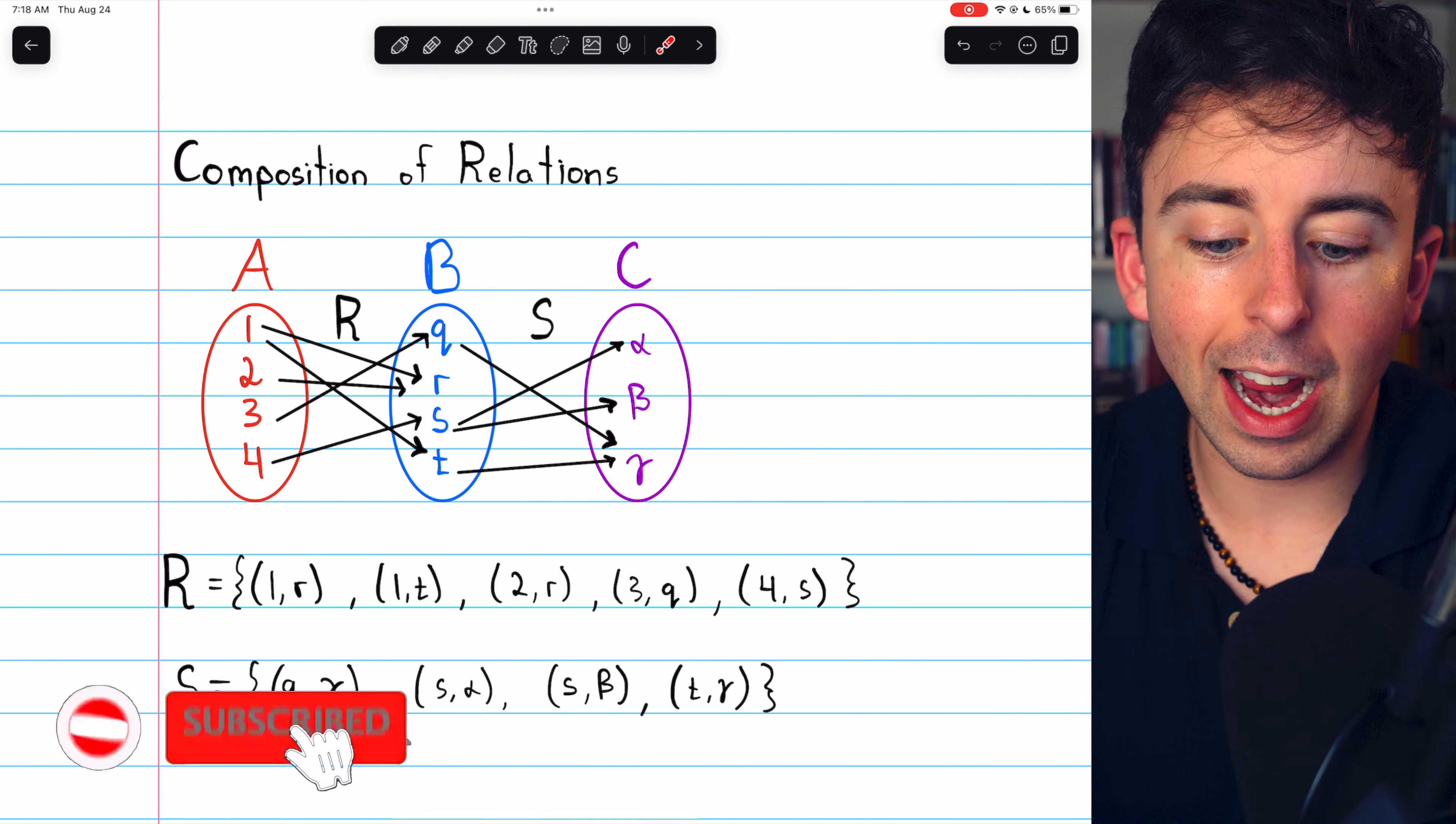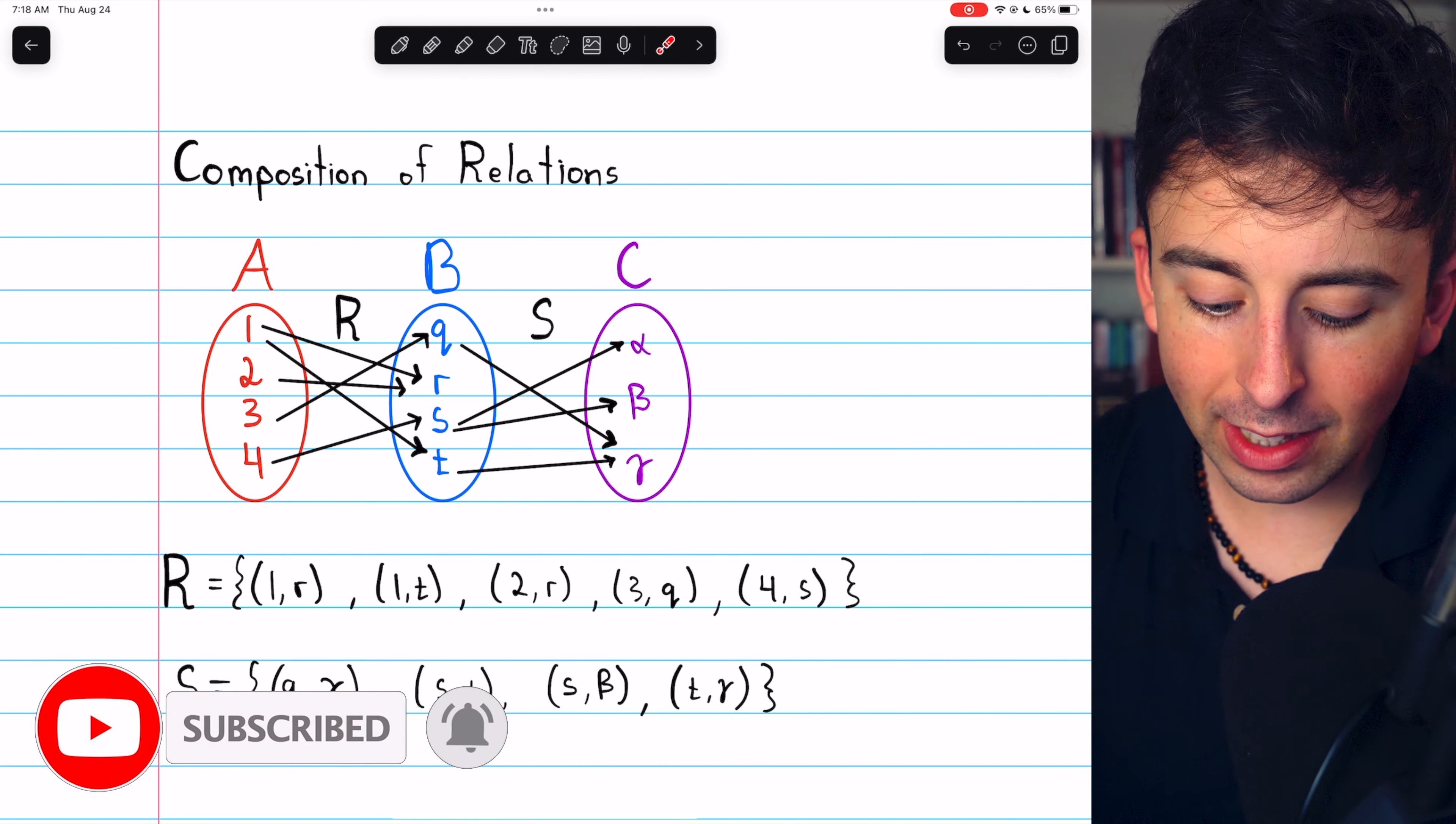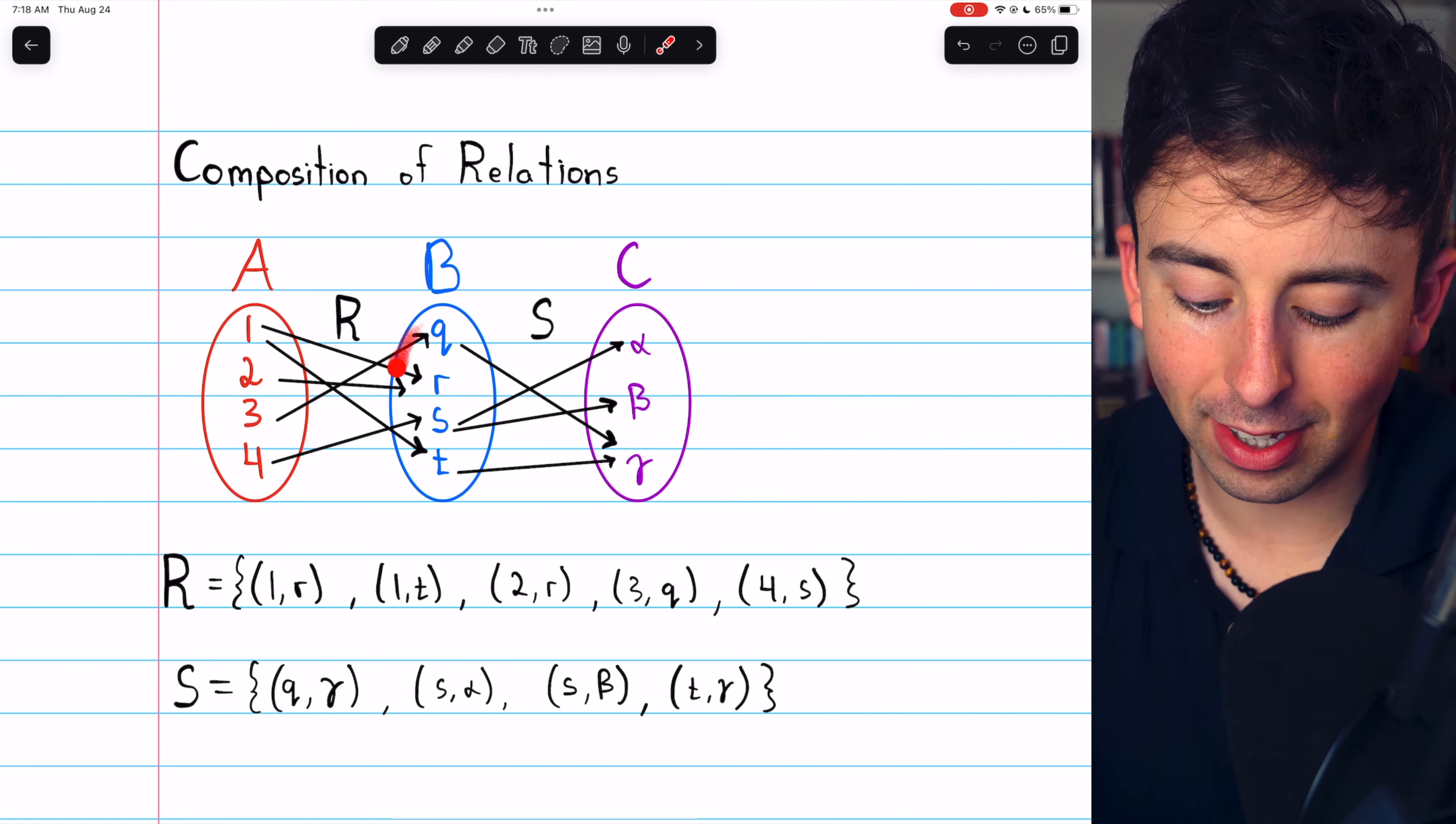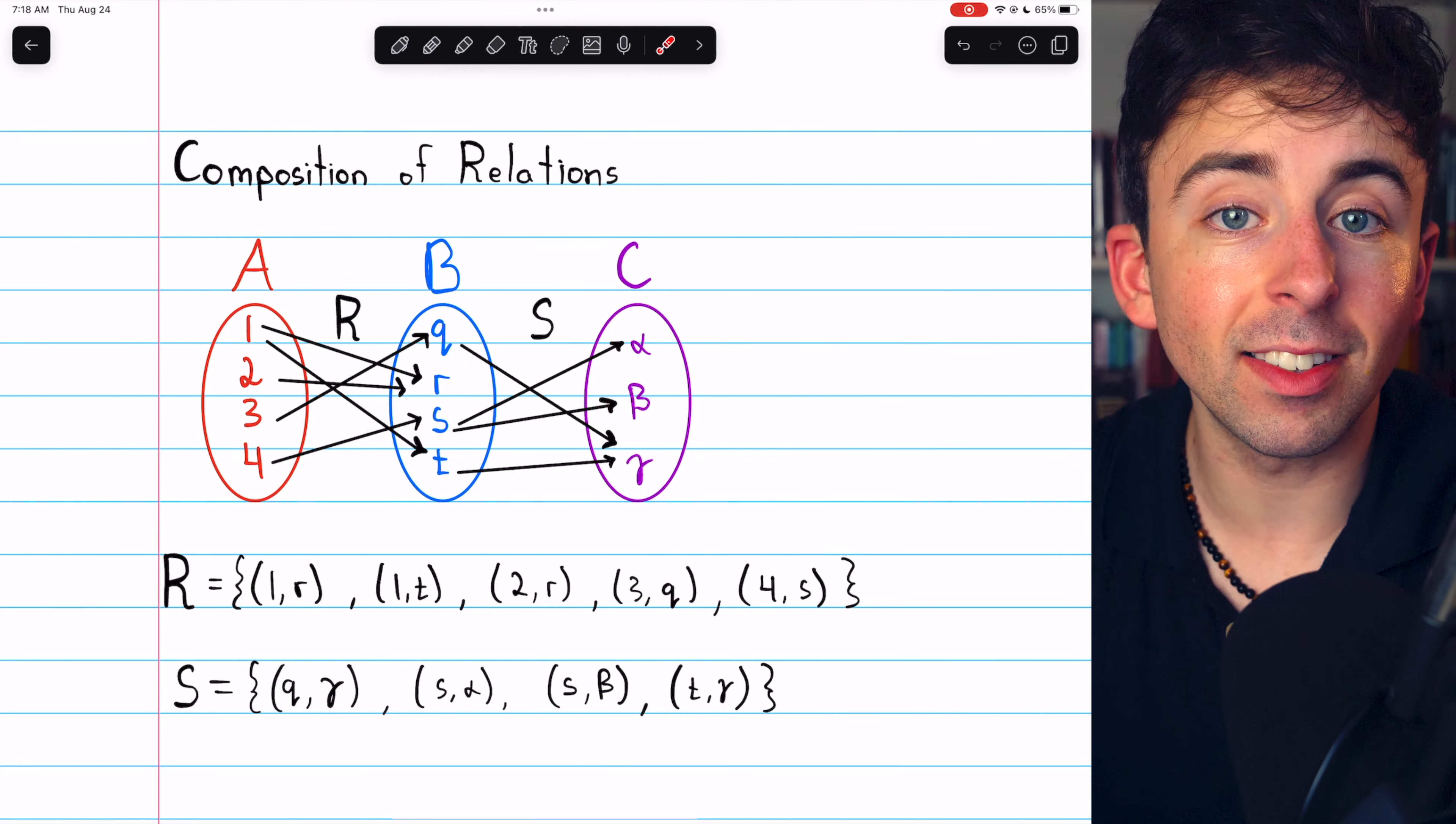Let's look at an example to understand what the composition of relations is. In this diagram, we have two relations, a relation R from a set A to a set B, and a relation S from the set B to the set C.